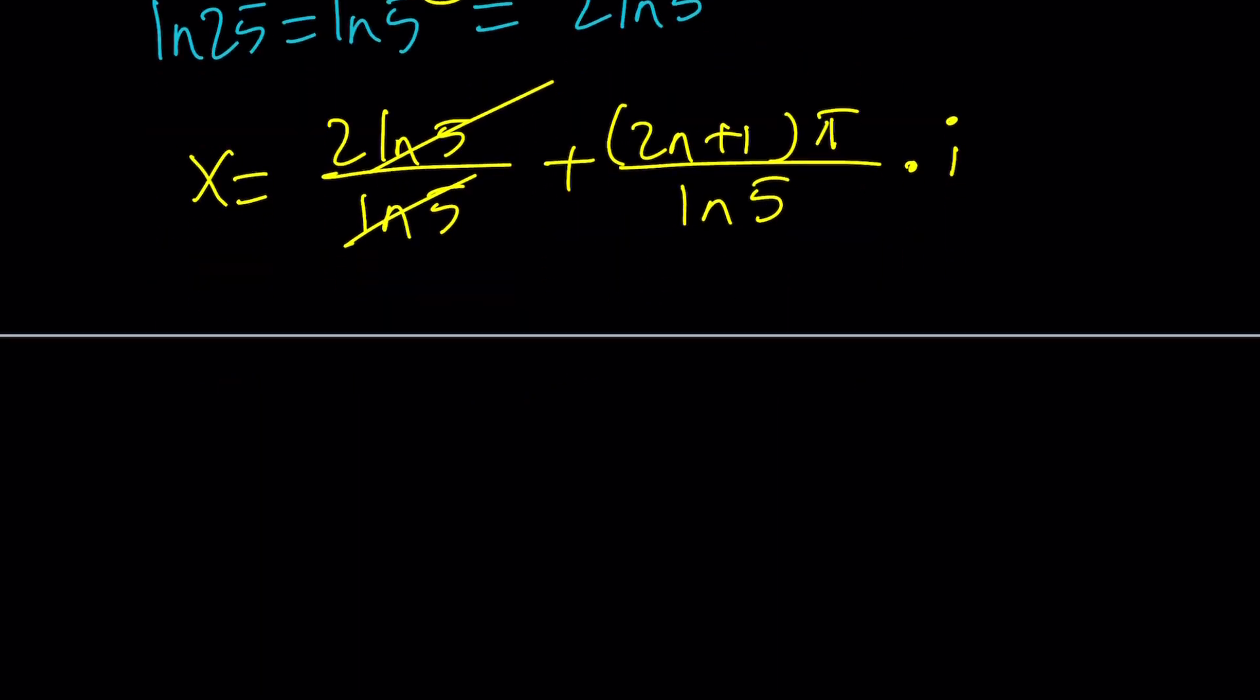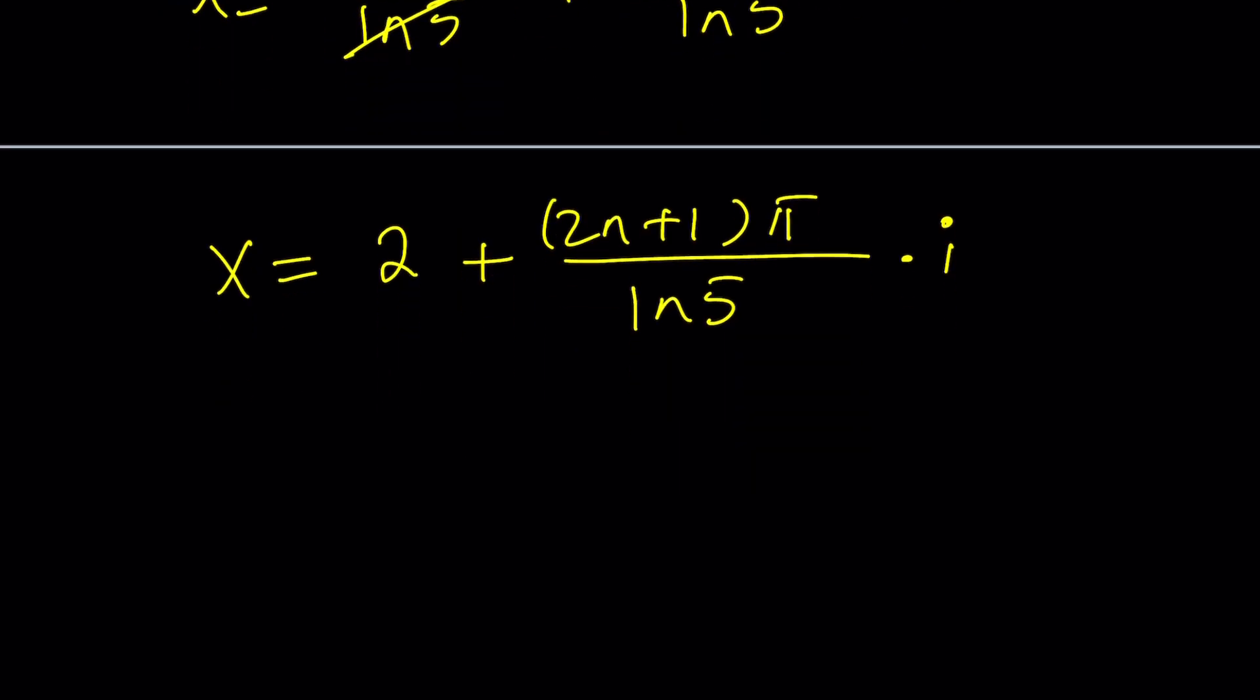And now is the time to talk about 2 again. So this is what I was talking about. At the beginning, remember, I said that x equals 2 does not work. Because think about it. 5 to the x equals negative 25. You can replace x with 2, but it's just going to give you a positive 25. If only I could just insert a negative. Yes. So even though x equals 2 does not work, it is actually the real part of the answer.